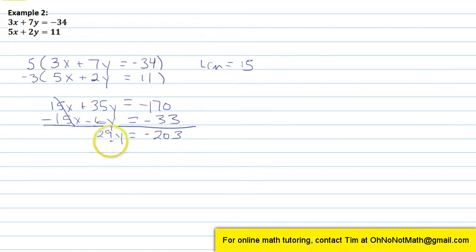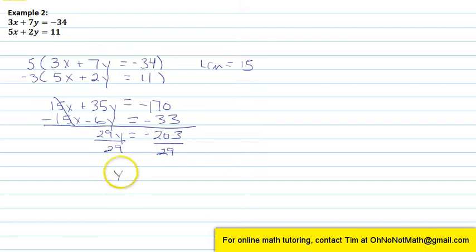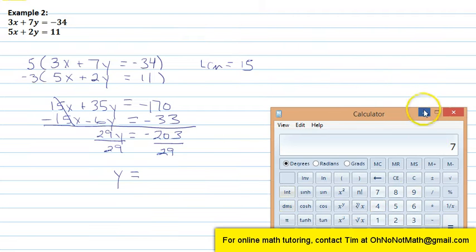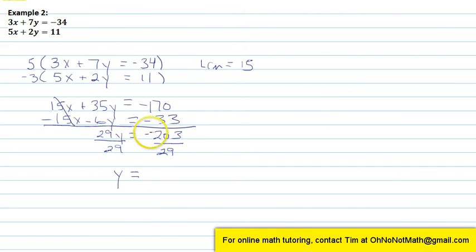Now we solve for y. We divide both sides by 29. Using a calculator, 203 divided by 29 is 7. Negative divided by positive is negative, so we have y equals negative 7.